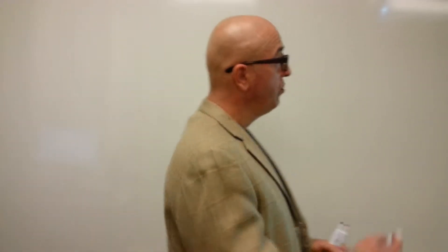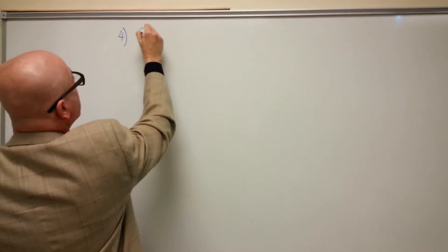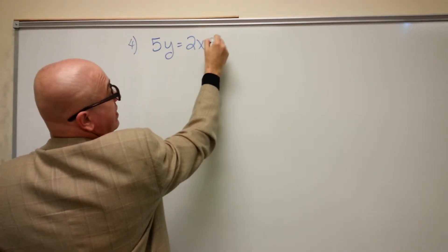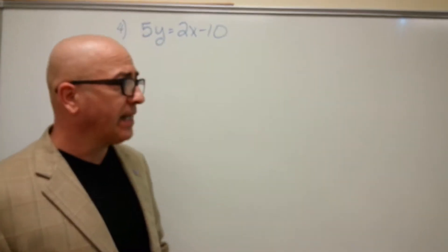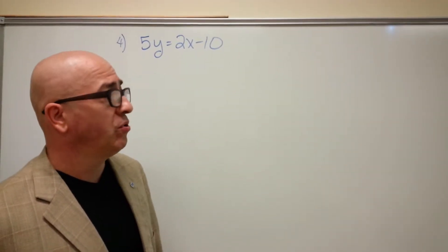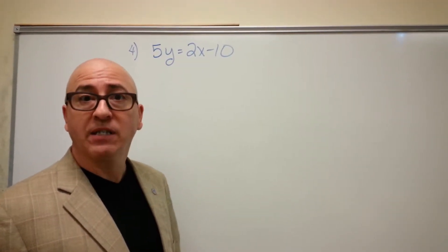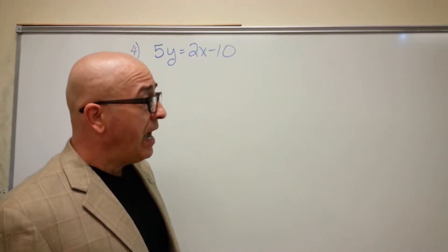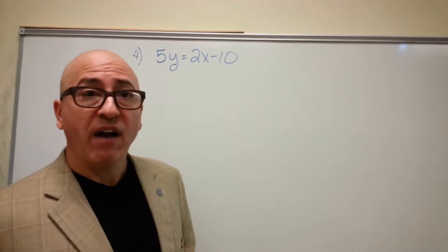We are going to do this problem here, number four. We're given the linear equation 5y equals 2x minus 10. We know it's a line because there are no square root symbols, no exponents. We could write it in the form ax plus by equals c. So it's a line and we're told give ordered pairs that are solutions and then graph the equation.